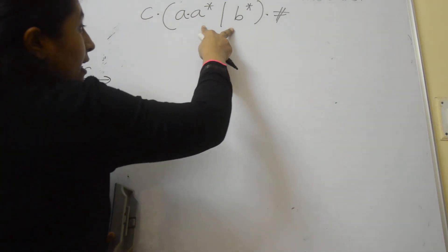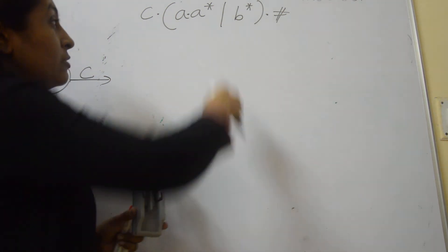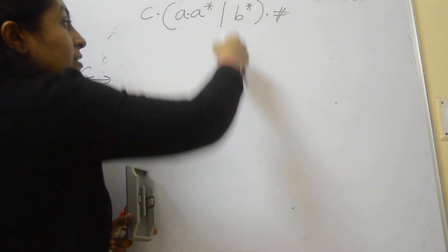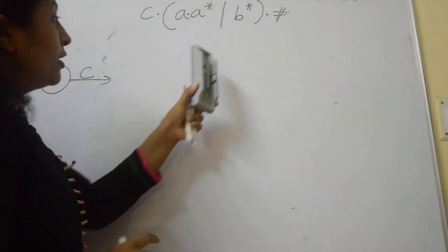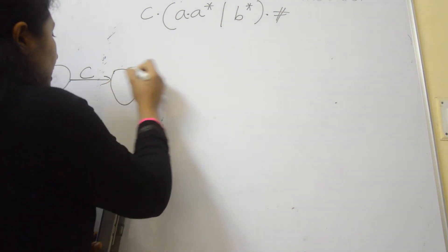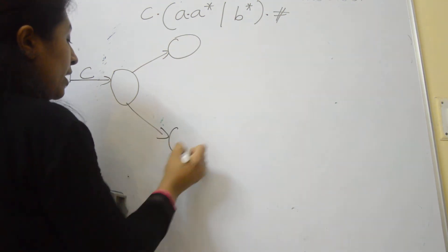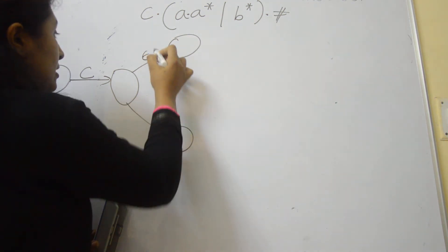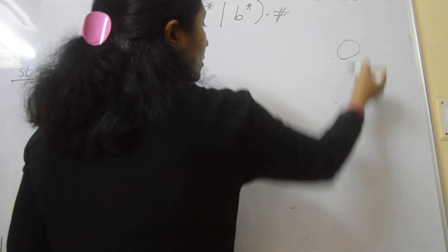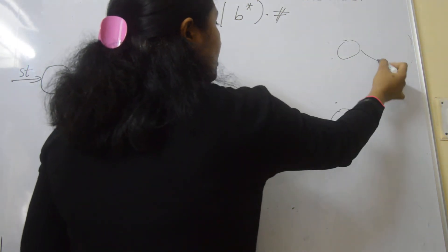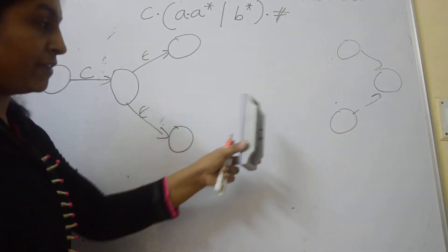The concatenation of C is with (AA*∪B*). Here this is the union operator. For the union operator, remember 6 states: 1, 2, 3 with null transitions, and at the end 3 more states on null transitions.